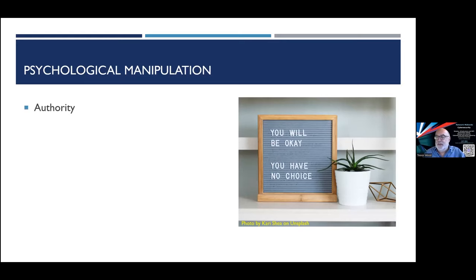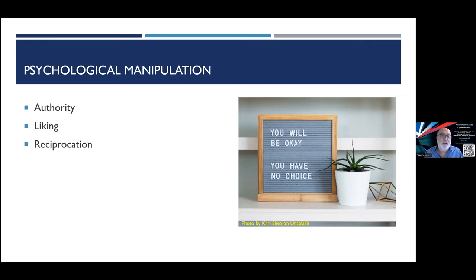Let's look at psychological manipulation techniques you'll come across. First is authority — many of us were taught to respect authority figures like doctors and police, and if they tell you to do something, you do it. Second is liking — if you like somebody, you're more likely to do what they ask. Third is reciprocation — if I do something for you, you'll want to do something for me.